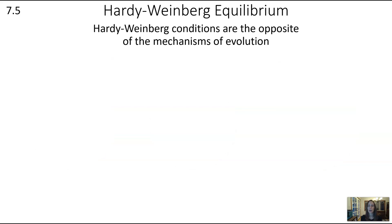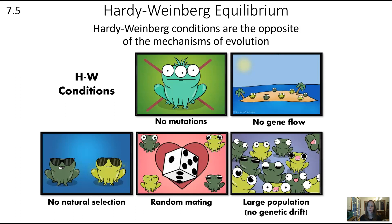All of the conditions of Hardy-Weinberg are the opposite of the mechanisms of evolution. The mechanisms that can cause change in a gene pool are evolution, so in order to have stability, we have to have the opposite be true. The five Hardy-Weinberg conditions are: no mutations, no gene flow, no natural selection, random mating, and large population. Large population is required to avoid genetic drift. These illustrations are from the Amoeba Sisters.